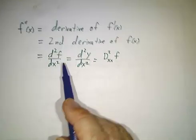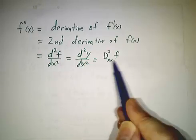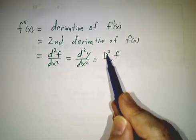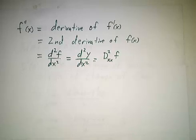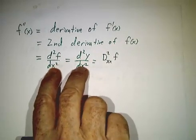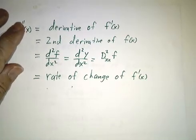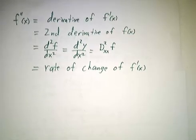Other notations are d²f/dx², d²y/dx², or Dxx or D²x of f. Again, this is less common. These two we're going to see a lot. But whatever you call it, it's the rate at which f prime is changing.